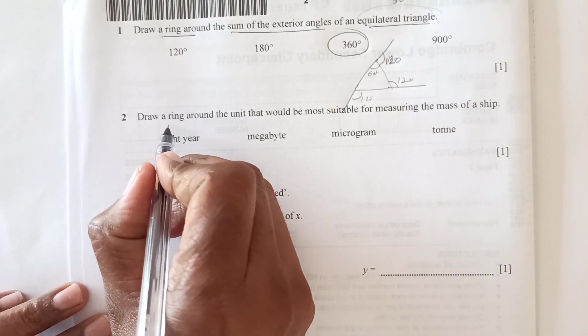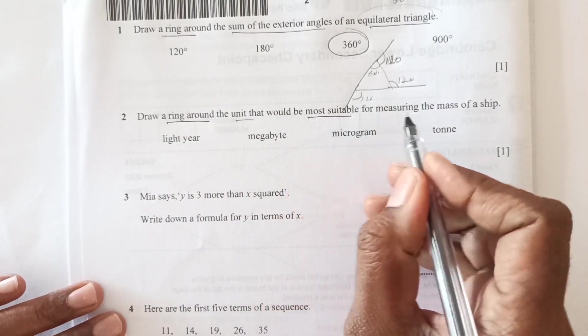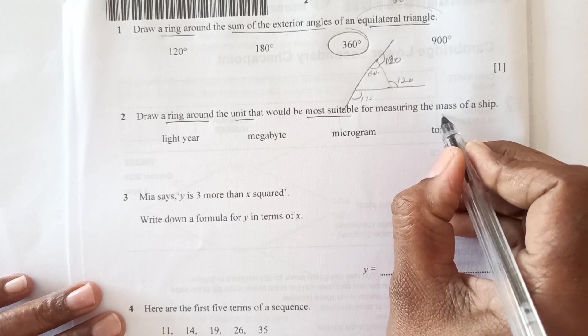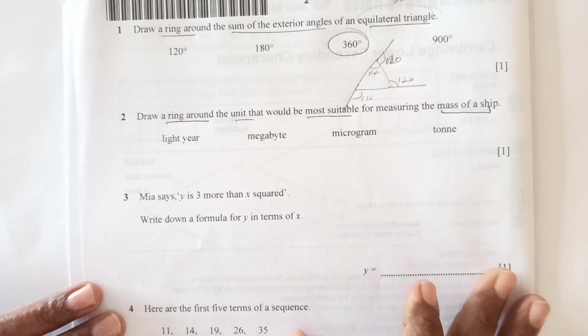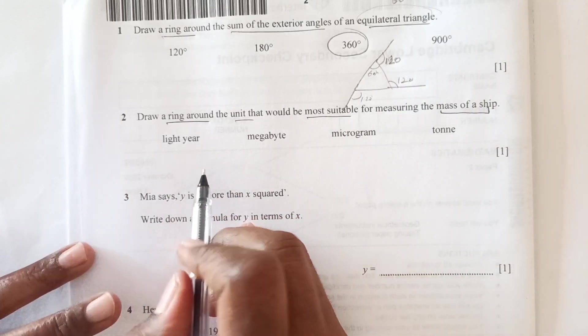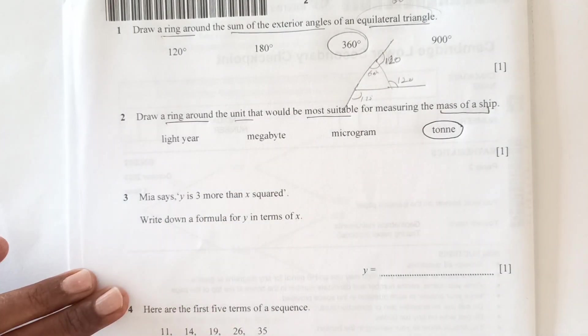Now number 2, draw a ring around the unit that would be most suitable for measuring the mass of a ship. So ship is like huge thing, so we will use the units of tonne.